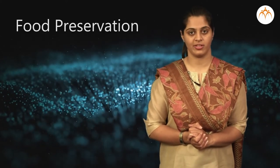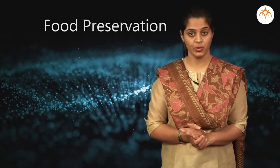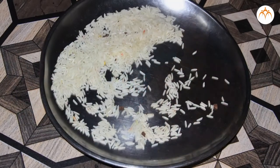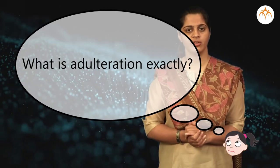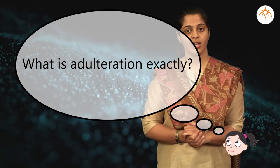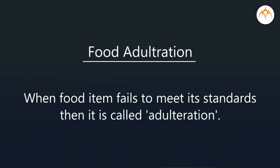So far, students, you have studied various methods of food preservation. But towards the end, I am going to tell you about food adulteration. One would find small or large stone pieces present in food grains, and before consuming them, those pieces are necessary to separate. When a food item fails to meet its standards, then it is called adulteration. To increase quantity of food, some other substances are added. Due to this, food quality lowers and may be dangerous for consumption.